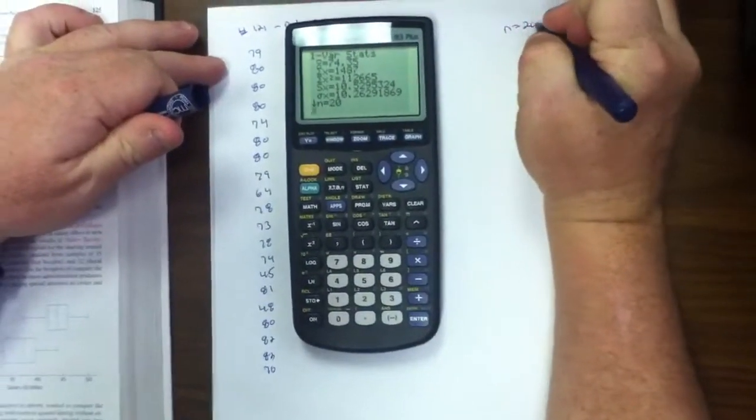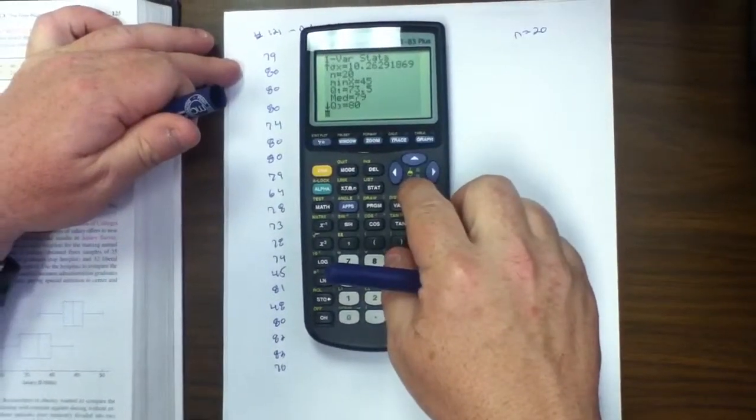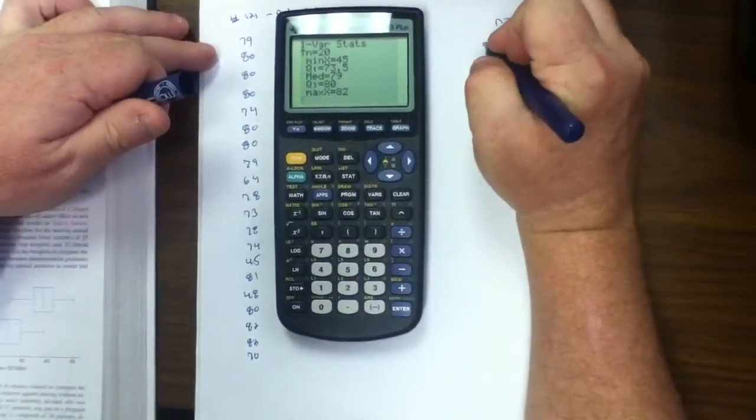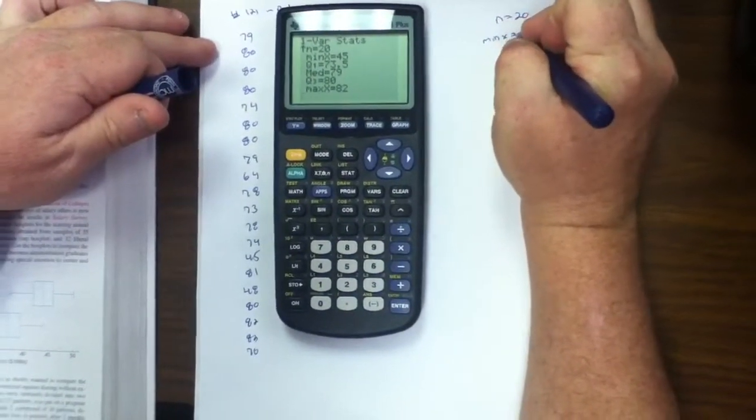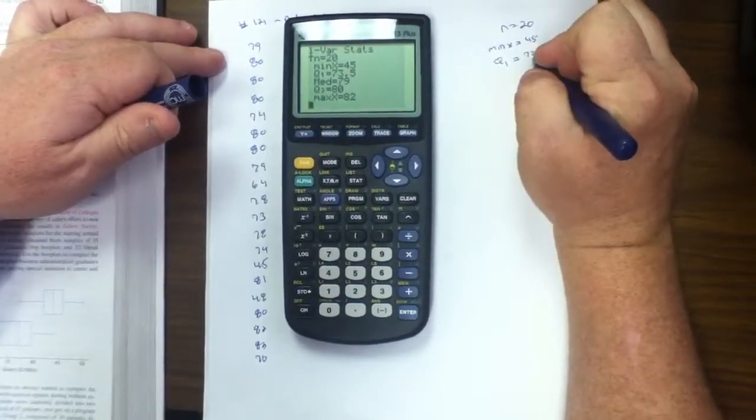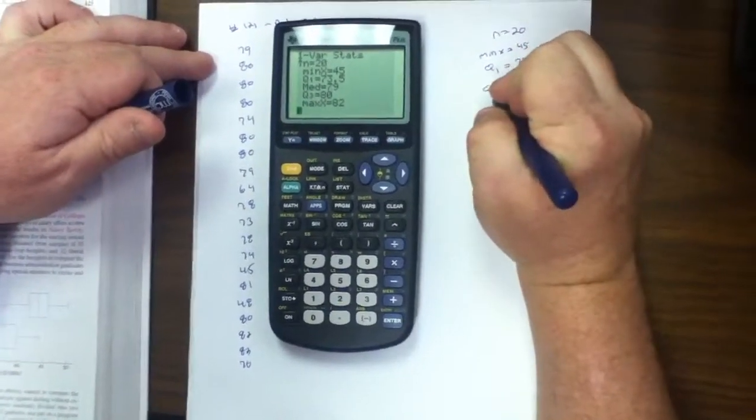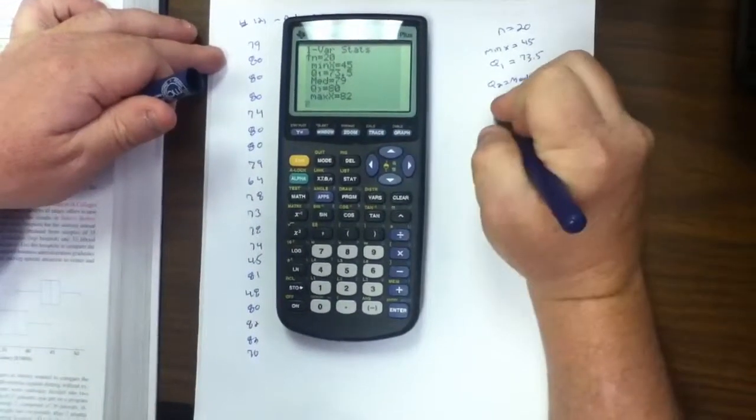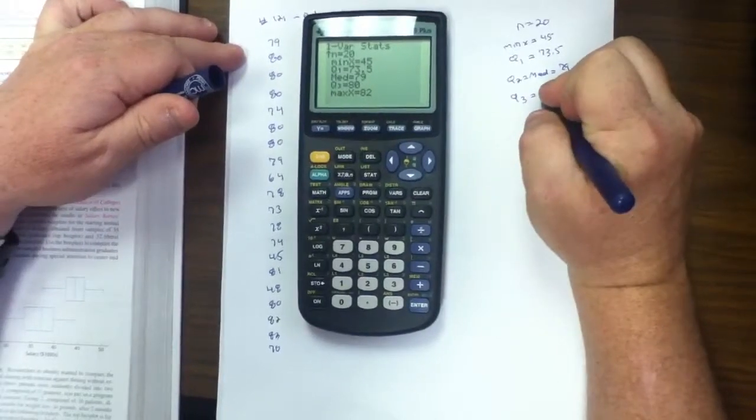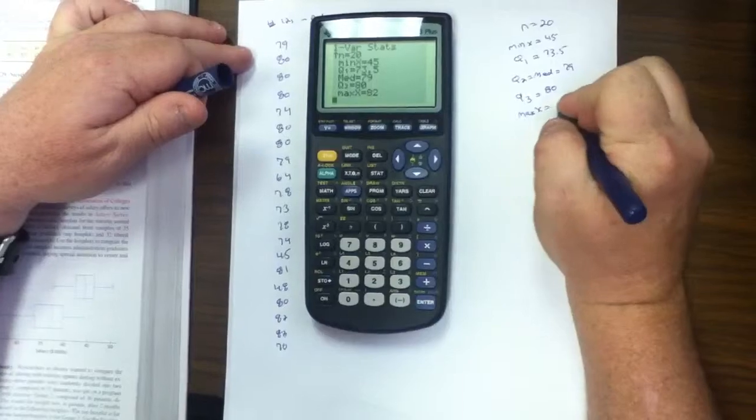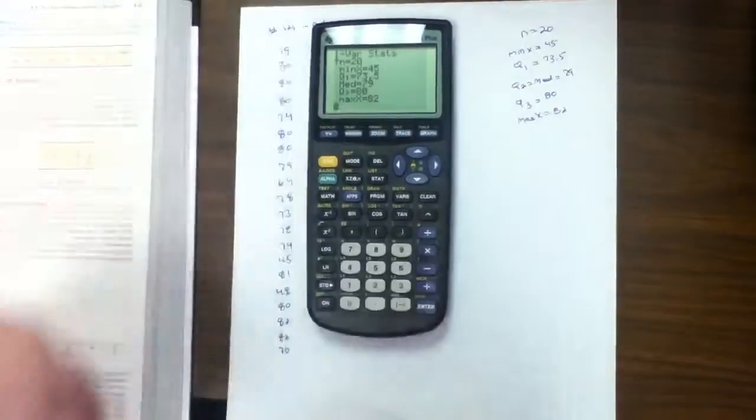I'll write down the sample size. N equals 20. We are interested in min, max, and quartiles. You have to arrow down to the bottom. Min X is the min. That's 45. Quartile 1, Q1, is 73.5. Q2, which is the same as the median, is 79. Q3, quartile 3 is 80. And max, or max X is 82. There's the five number summary.